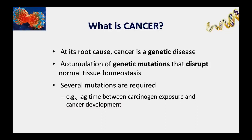How do cancer cells acquire the ability to proliferate when they shouldn't? At the root cause, cancer is a genetic disease. That doesn't mean it's all inherited, but cancer is due to the accumulation of genetic mutations in genes involved in those regulatory safeguard pathways, disrupting normal tissue homeostasis.